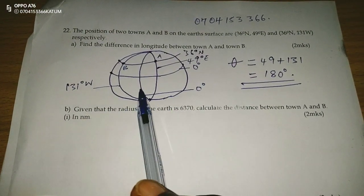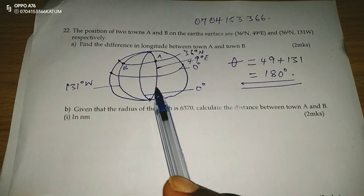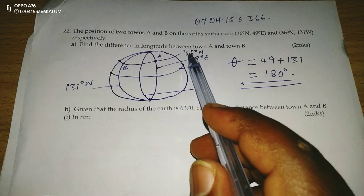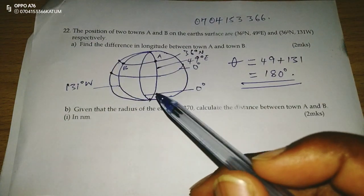From A to B, that is two places on the same latitude, latitude 36. It means they are places on a small circle.